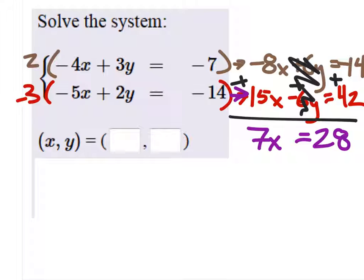Oh, nice. So now when I divide both sides by 7, I get x is 4. I didn't forget the negative on this one, did I? All right, sweet. So x is 4.